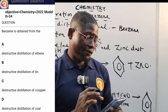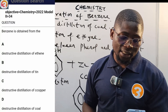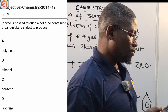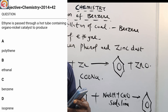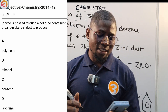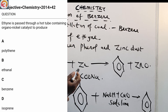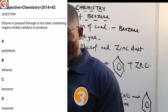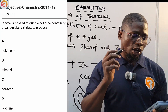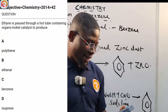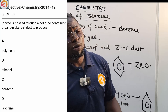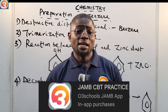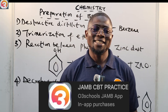The 2022 question number 34 — benzene is obtained from — the answer is option D: destructive distillation of coal. Then 2014 number 42: ethyne is passed through a hot tube containing an organo-nickel catalyst to produce what? The answer is option C: benzene — that is the trimerization of ethyne. There are many more questions on the All Three Schools JAM CBT Practice App — download, activate, and start practicing. See you in the next class where we'll talk about the reactions that benzene undergoes.